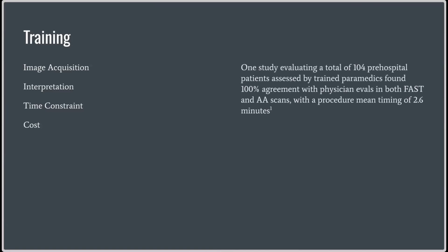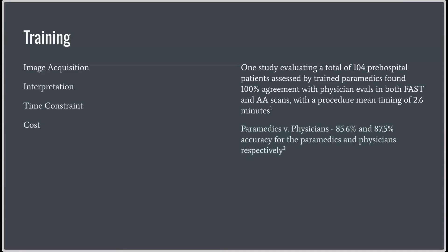There are some very interesting data that supports the training of paramedics. In this study, 104 paramedics were trained to evaluate using both FAST and abdominal aorta scans. They got a 100% score with their assessments, with a mean timing of 2.6 minutes - which is pretty quick. A very cool point is that they only spent one hour in a very intensive session, and that was all it took to achieve high rates of success.